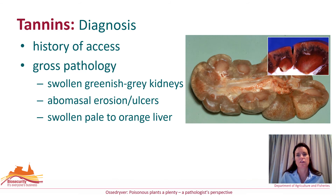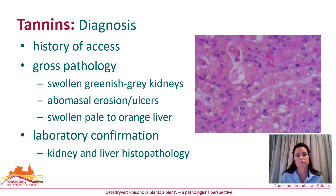Producers and veterinarians in the geographical range of yellow wood should be suspicious of it being a source of poisoning in animals presenting with signs of renal failure. A tentative diagnosis may be supported by the finding of kidneys that are shrunken and sometimes discoloured. There may be fluid build-up in body cavities and erosions and ulcers present along the gastrointestinal tract related to uraemia. In early cases where animals are photosensitised, the liver may be swollen and pale, with jaundice. Kidney and liver pathology, although not specific, will support the clinical and gross pathology picture.